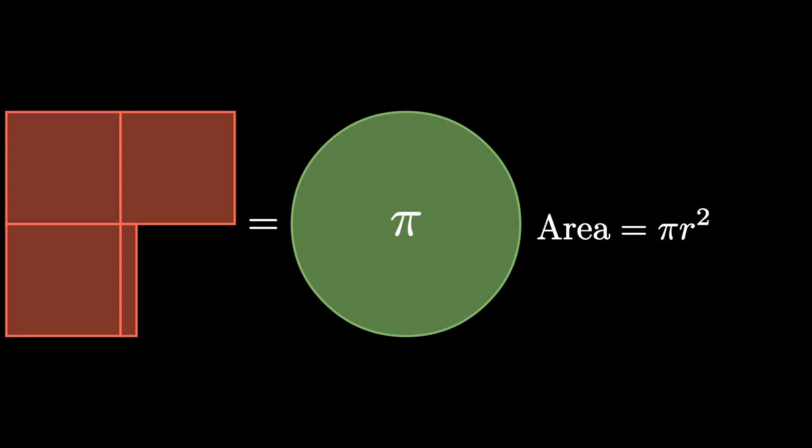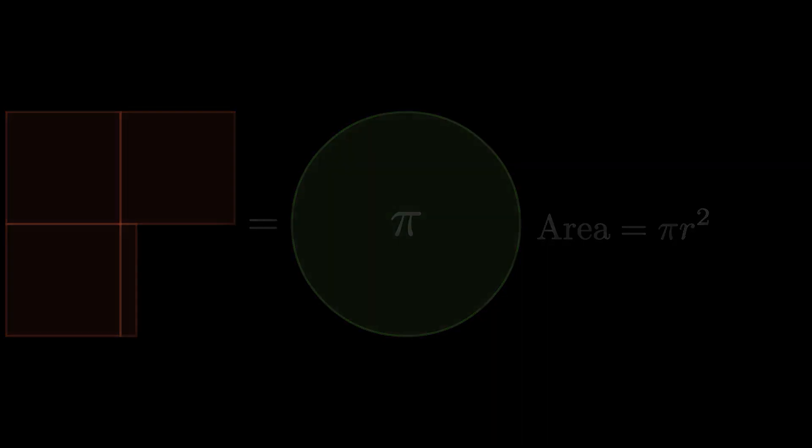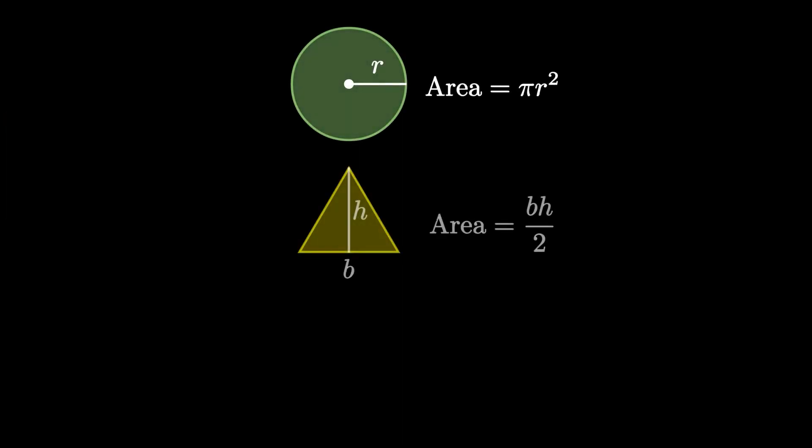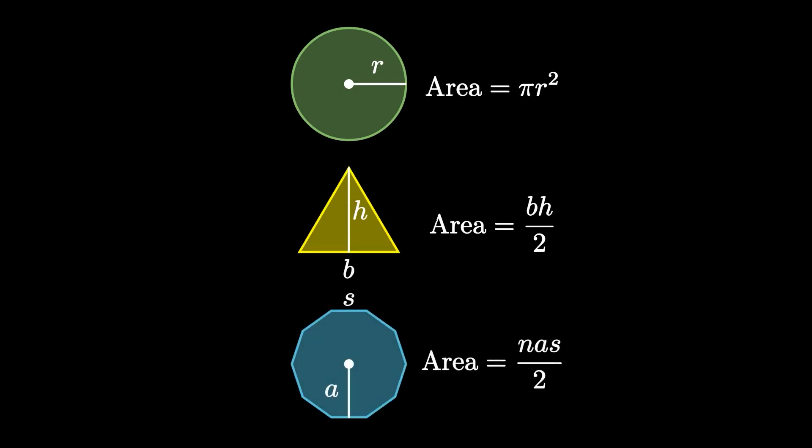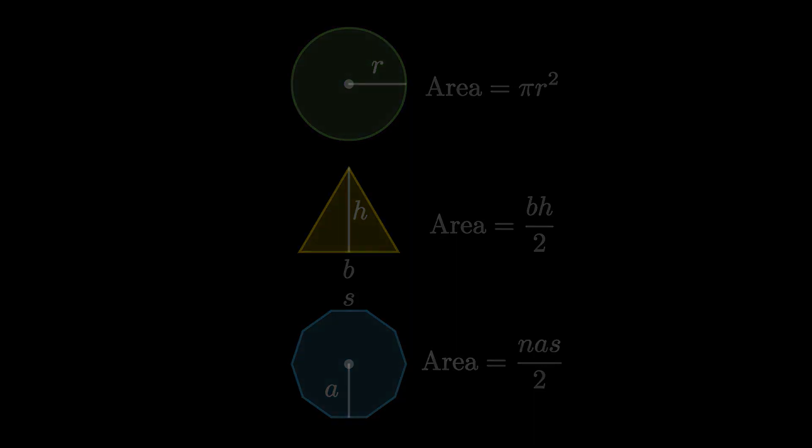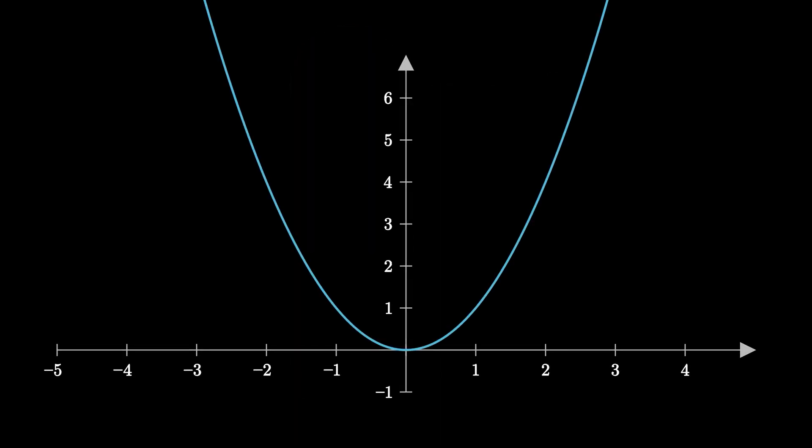Thus, the problem of finding the area of some closed planar shape is called quadrature or squaring. Now we can square the circle, triangle, regular polygons, whatever, pretty easily with simple formulas, but what if we wanted to square a graph? Like a parabola for example. What do we do?